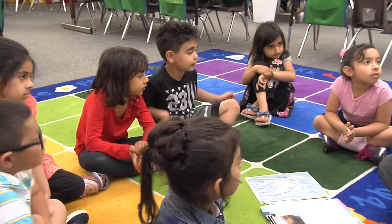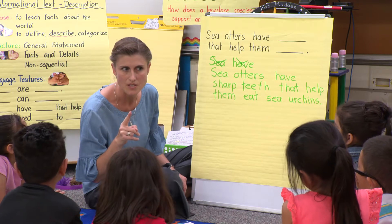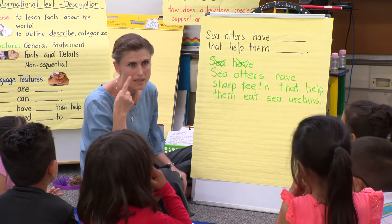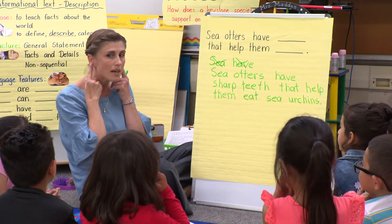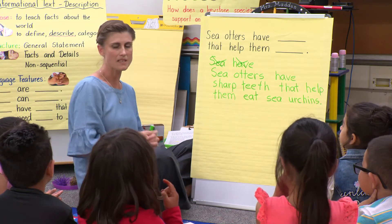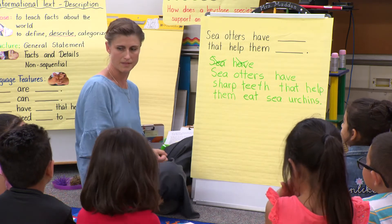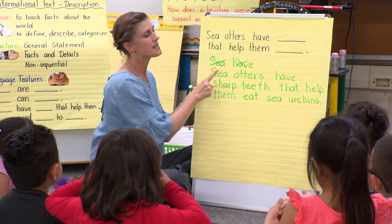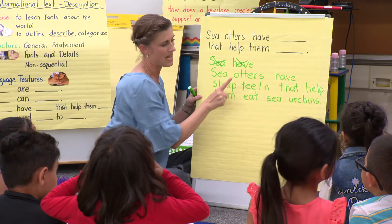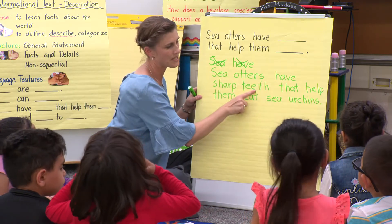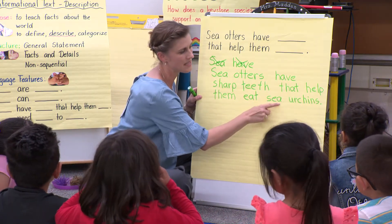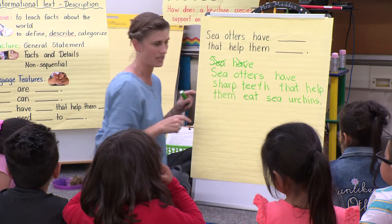The teacher uses a Five Star Listeners routine: eyes are watching, lips are closed, ears are listening, hands are still, ready. The class reads together: sea otters have sharp teeth that help them eat sea urchins.